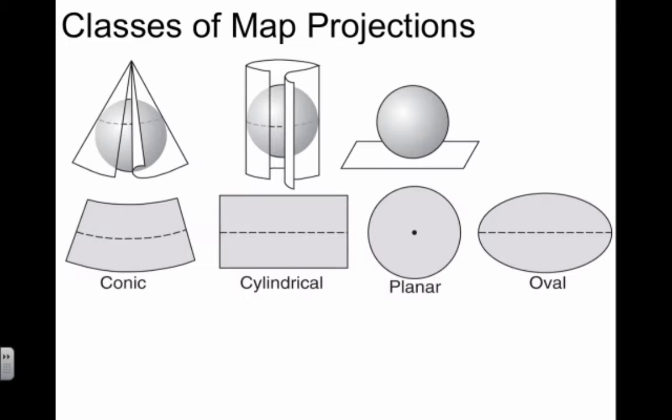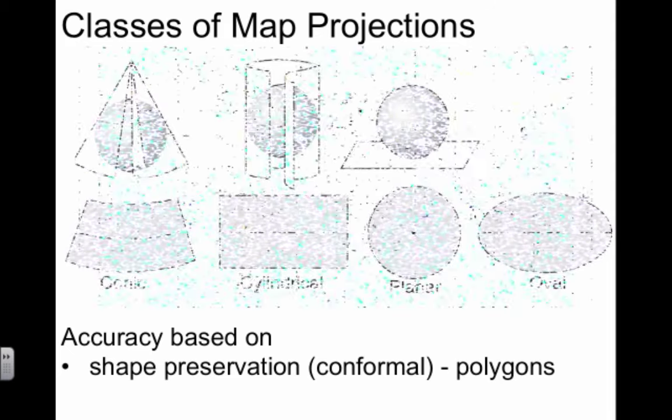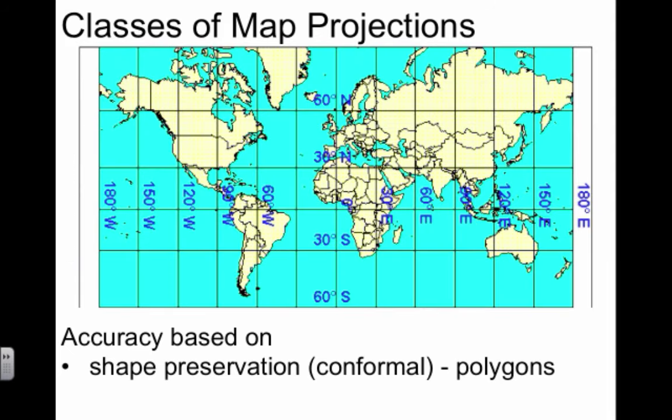There are four basic classes of map projections based on how they're derived: conic, cylindrical, planar, and oval. More importantly, there are two basic types based on accuracy. The first type is conformal—these projections preserve the shape of polygons. Let me explain what a polygon actually is.